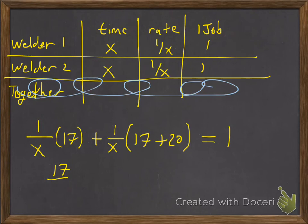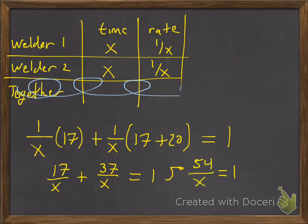Then we'll rewrite. So we have 17/X plus 37/X is equal to one job. We have a common denominator, so it's going to be 54/X equals one.